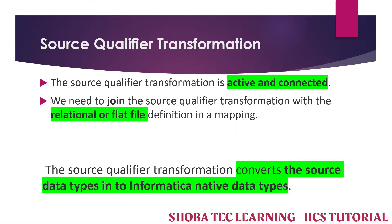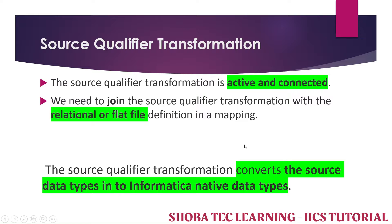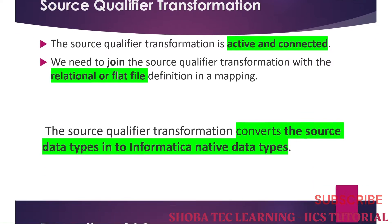Hello everyone. In our IECS tutorial series, last session we saw Source Qualifier transformation — we done that mapping with the properties of the filter and the sorter. Today we are going to see the next properties of the Source Qualifier transformation. Before going to that, we'll do a small recap. The Source Qualifier is active and connected, and we can deal with relational or flat file sources. The main point of the source qualifier is it converts source data types into Informatica native data types. Now we'll start our practical session.